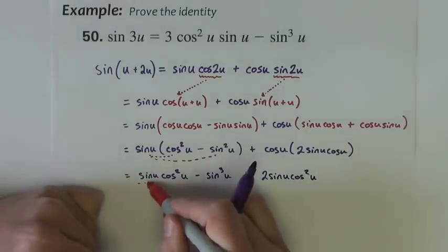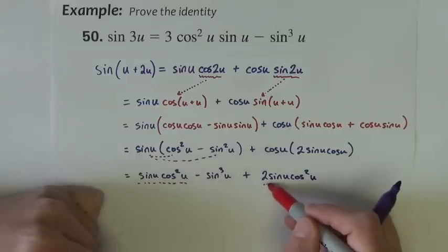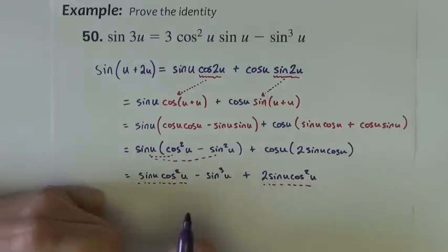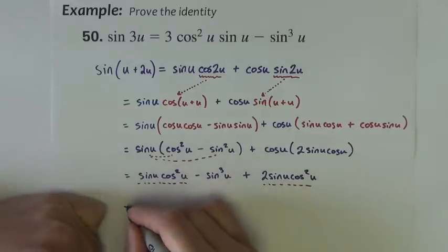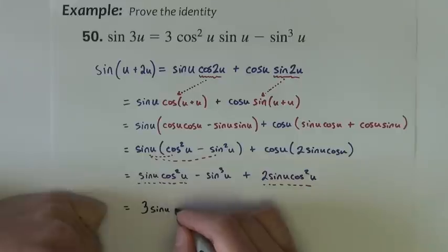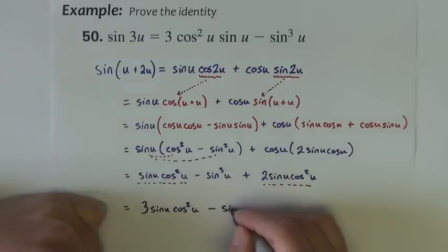Notice that this term, and this term are like terms, they can add together, I've got 1 plus 2, I've got 3, sine u, cosine squared u, minus, sine cubed u,